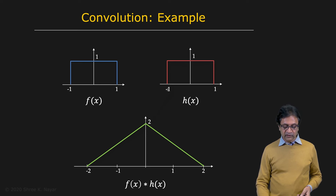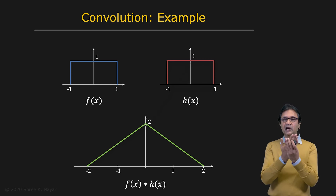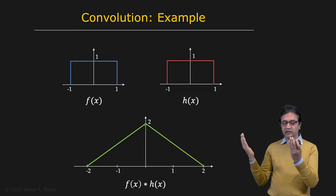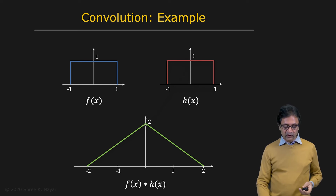When the two rectangles sit exactly on top of each other, the product is the rectangle itself, and the area under it is going to be 2, because you have a width of 2 and a height of 1. And then as you slide out and one rectangle slides out of the other, you're going to get exactly the same function flipped — it's symmetric, and you get a triangle.